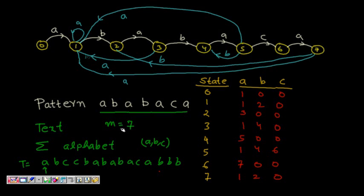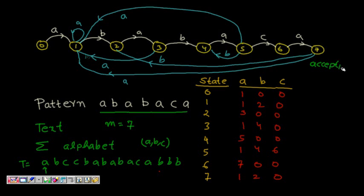In the state machine, we need to match the whole pattern. If we have matched up to some particular prefix, we go to the state corresponding to that prefix length. If we have matched 'a b a' — a prefix of length 3 — we are at state 3. If we haven't matched anything, we are at state 0. When we have matched all seven letters, we are at state 7, which is the accepting state.